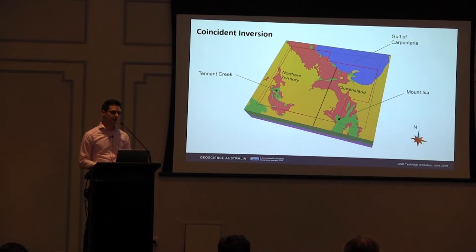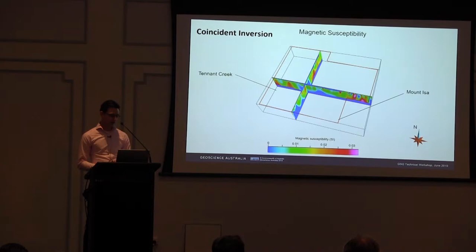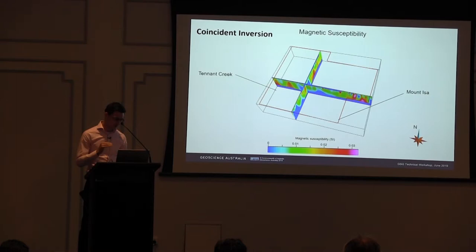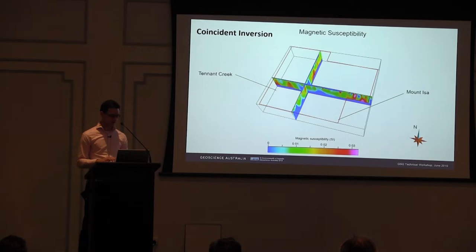I'm going to show you some results of that coincident inversion. This is our area of interest with slices through our magnetic susceptibility model. There's a near-surface layer shown in blue, with a sharp contrast between that and the crustal volume in the middle of the slice. That sharp contact is there because we've put it in as a hard constraint. Similarly, the blue layer at the bottom is our Curie depth constraint — those layers are non-magnetic and you see a sharp contrast with what's above and below.